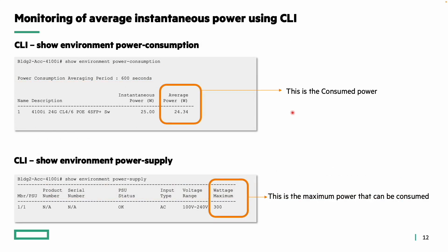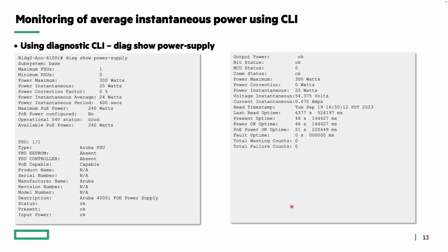To monitor average instantaneous power using CLI, the key command is show environment power consumption, which gives the average power and consumed power of the device. There is also show environment power supply, which gives PSU status, input type, voltage ranges, and maximum power. Additionally, using the diag command in diagnostic mode, the command diag show power ifm supply provides PSU details, instantaneous power, instantaneous average, and the period over which it was calculated — for example, 24 watts over the default 600-second period. PSU-specific information is also available via diag show power supply.